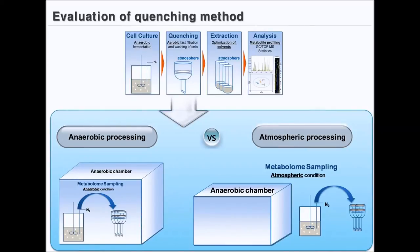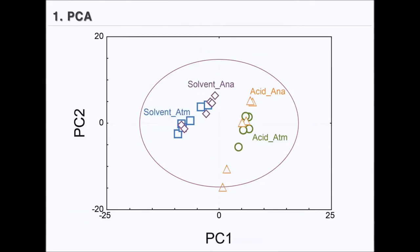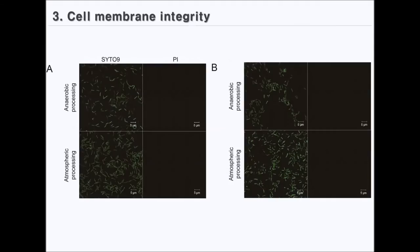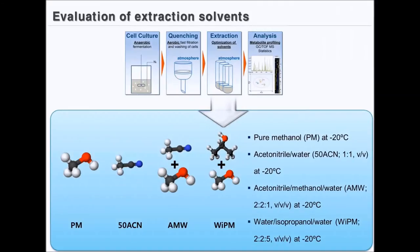Firstly, we compared atmospheric and anaerobic processing for metabolite profiles. PCA results indicate that metabolite profiles were not affected by air during processing. The peak abundance of 10 metabolites did not significantly differ between atmospheric and anaerobic processing at both phases. The possible negative effects of aerobic sampling of Clostridium acetobutylicum on its cell membrane integrity were not observed in this study.